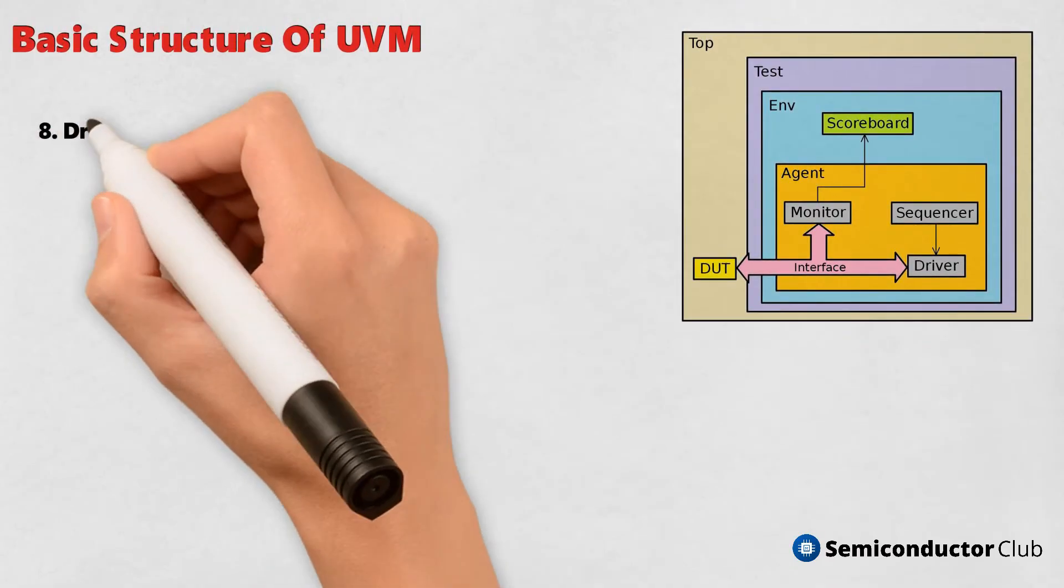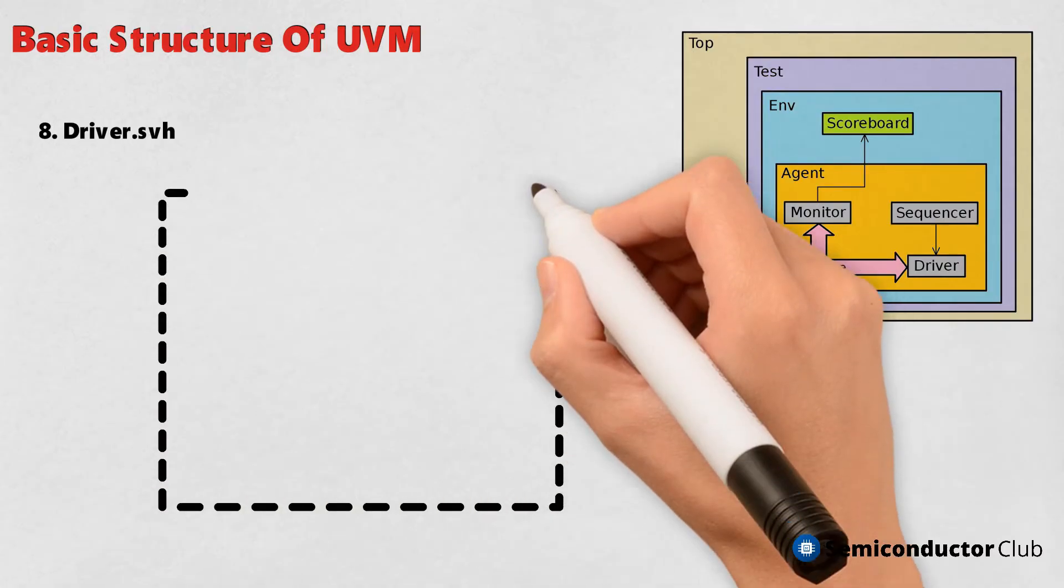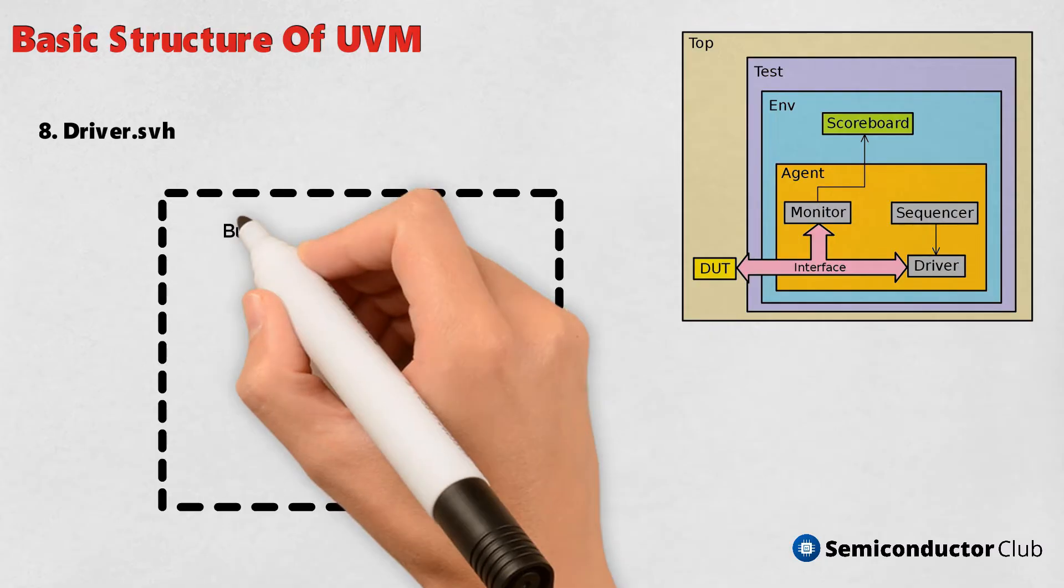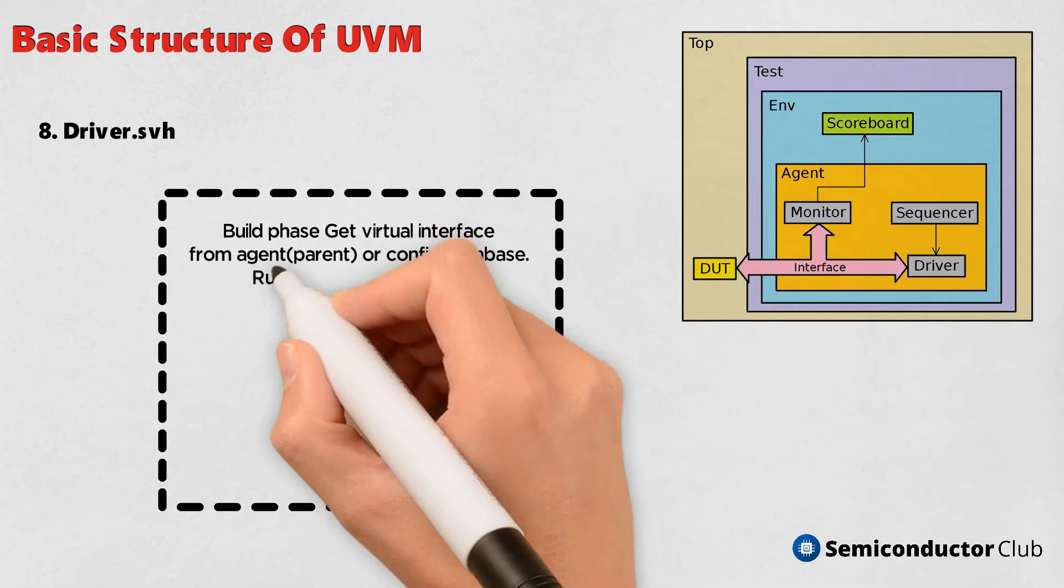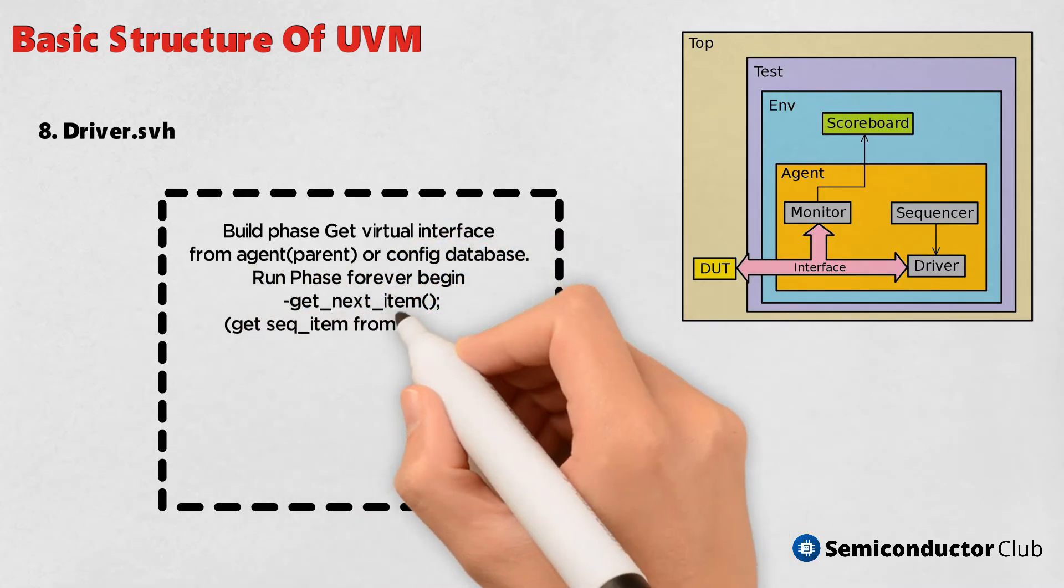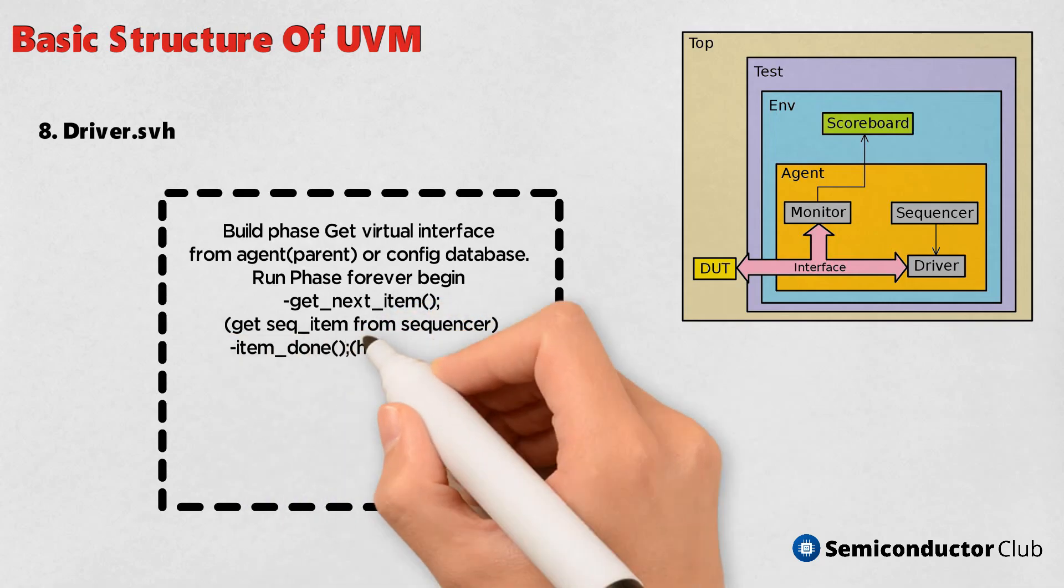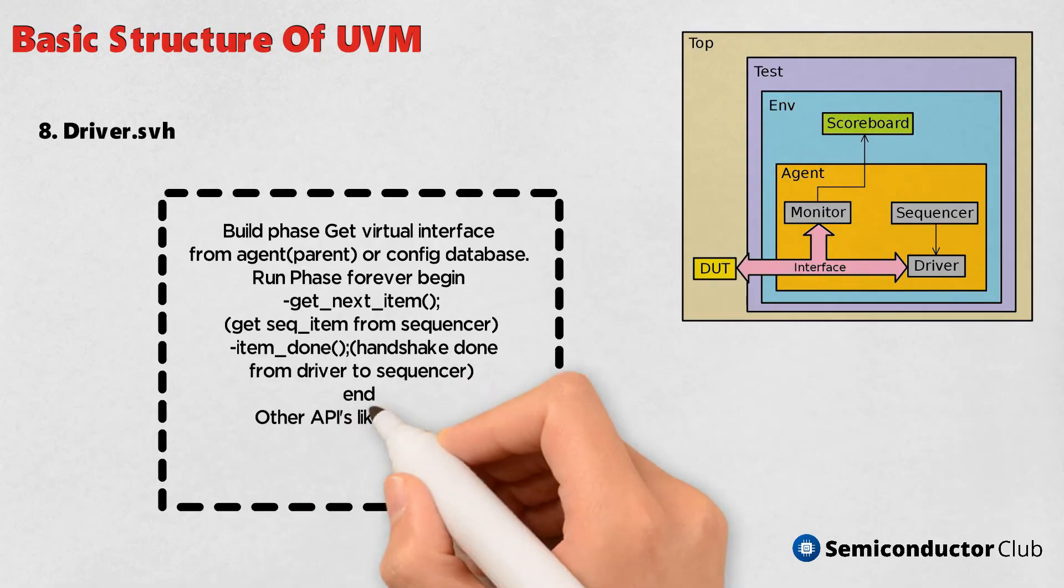8. Driver.svh - Build phase: get virtual interface from agent, parent or config database. Run phase: forever begin, get_next_item (get seq_item from sequencer), item_done (handshake done from driver to sequencer), end. Other APIs like peek, try_get, put could also be used.